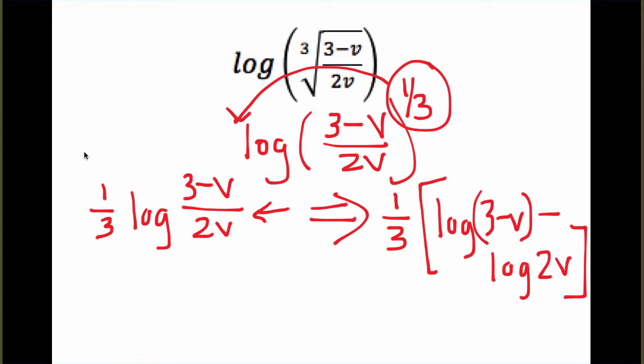Now if you look here, we have 3 minus v in one logarithm. And we can't separate subtraction when it's inside. We can go the opposite way, but we can't separate that subtraction at all. But in the second one, the 2v, that is multiplication and we can separate that.